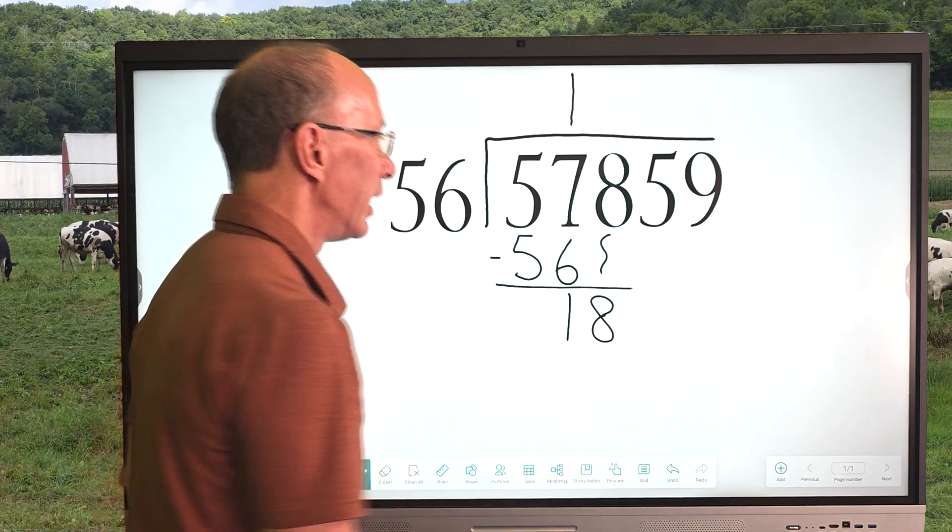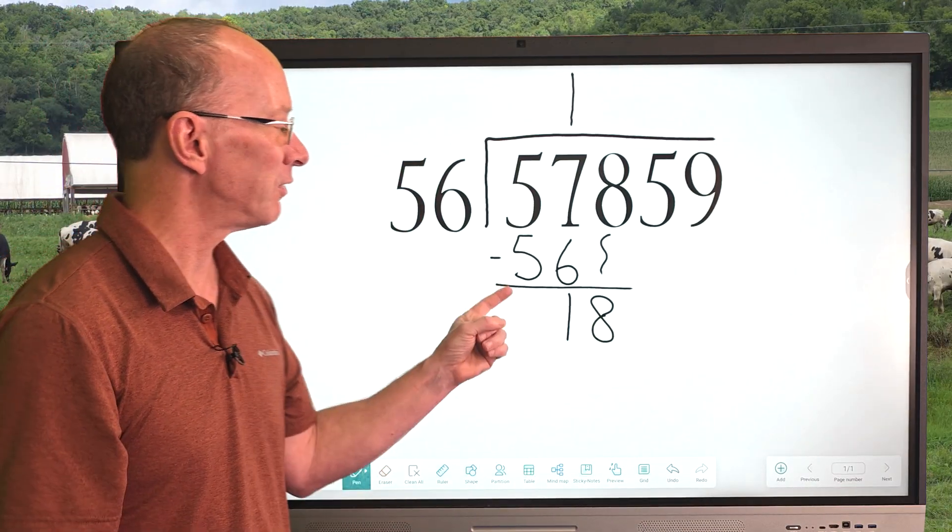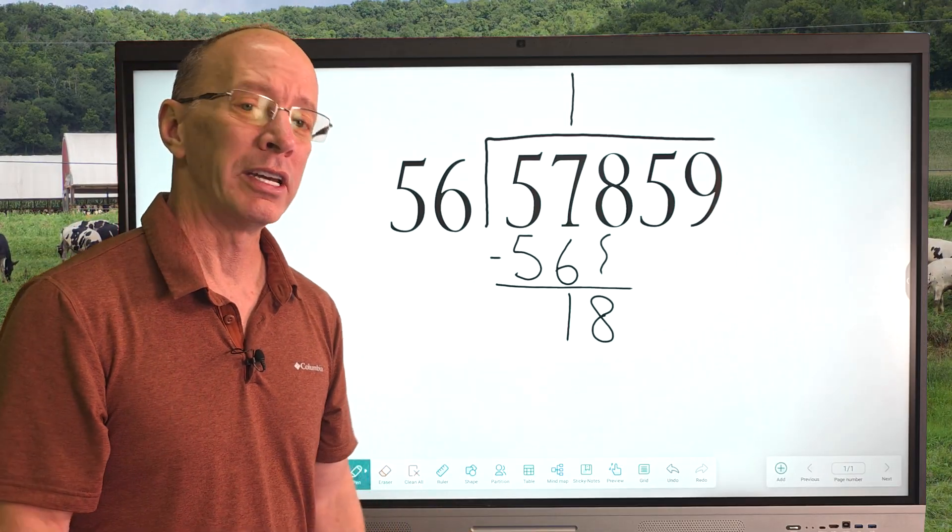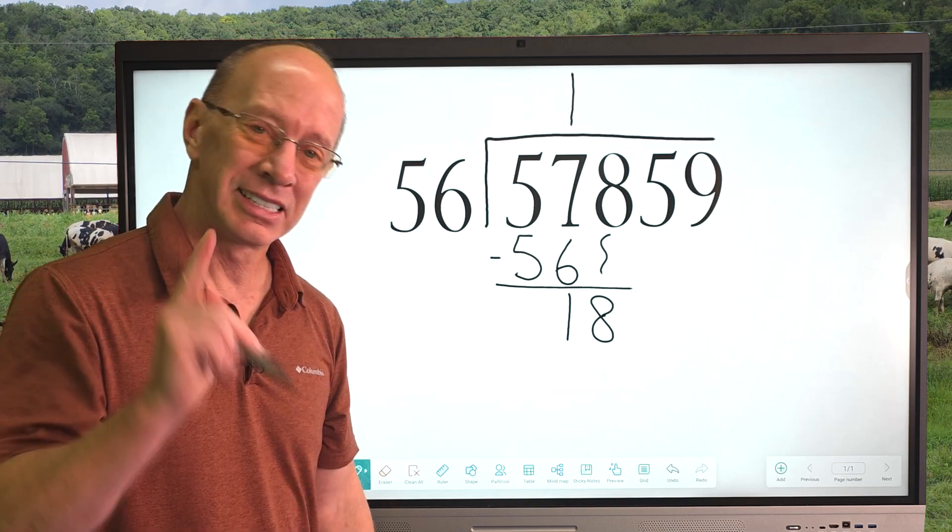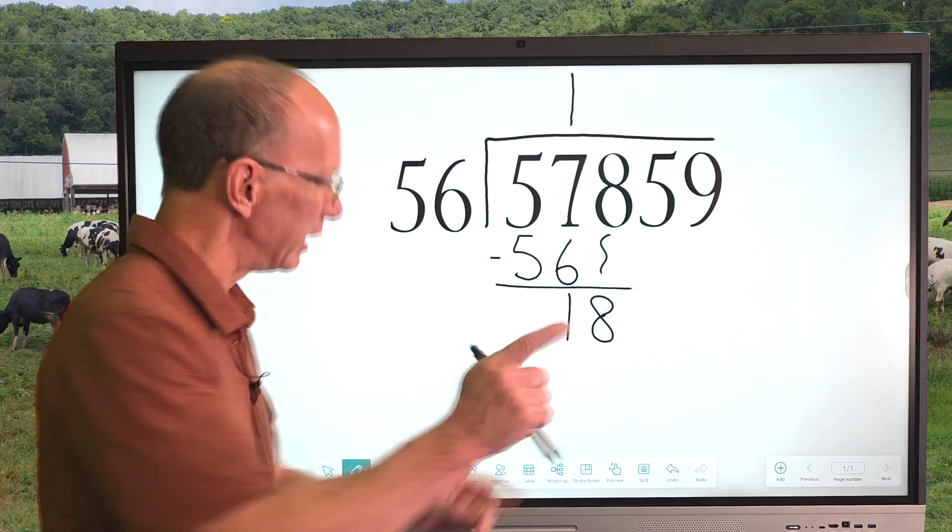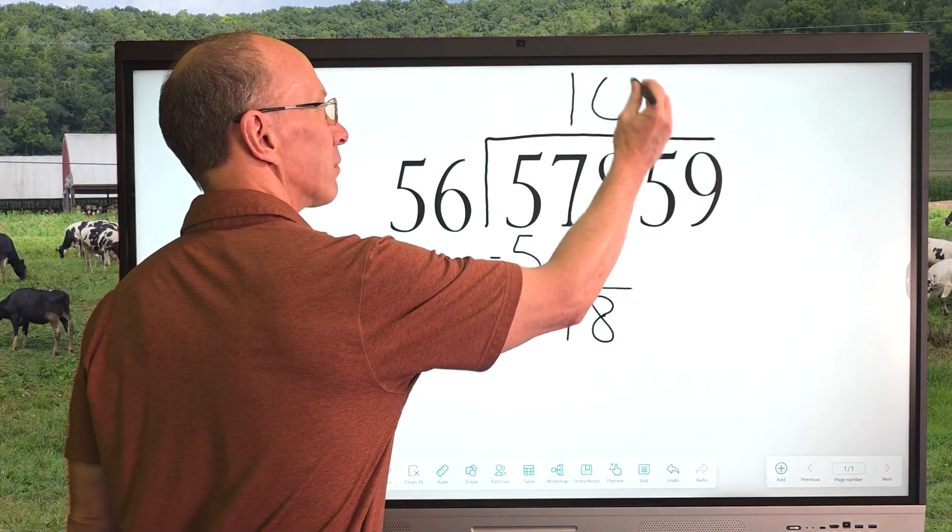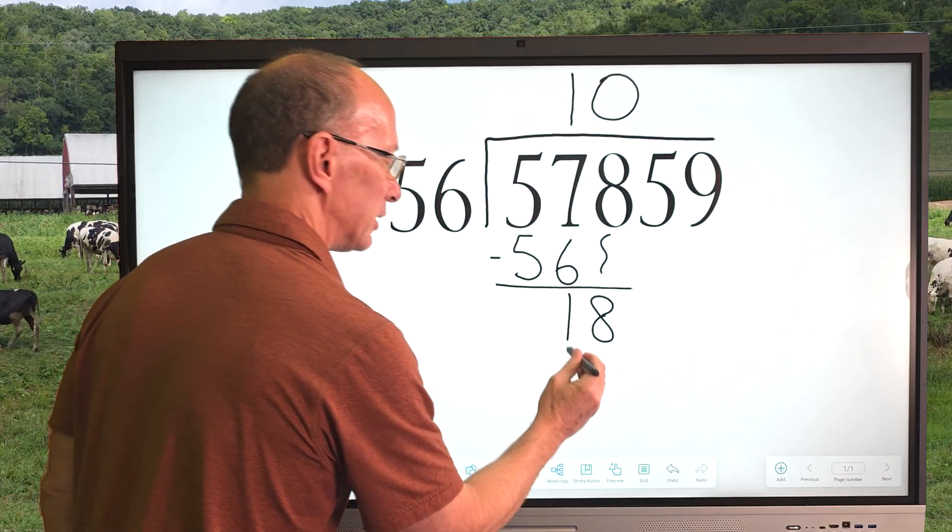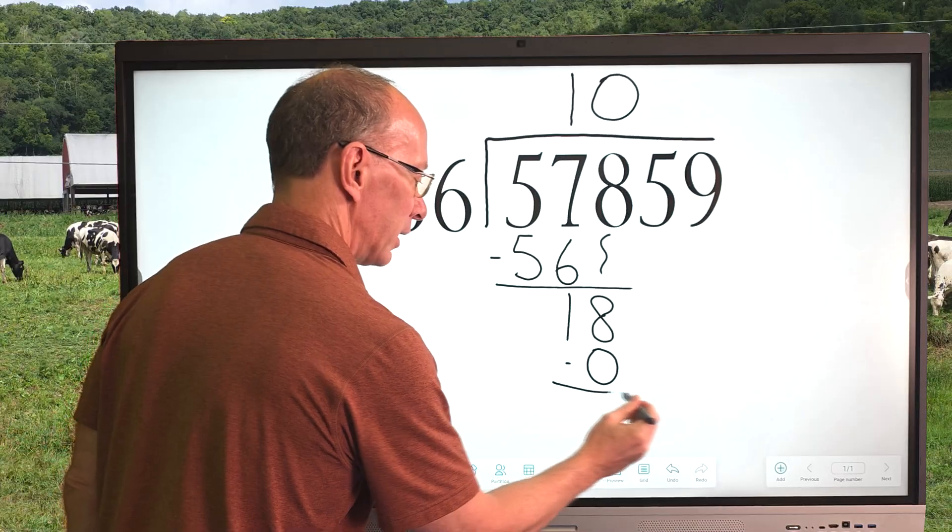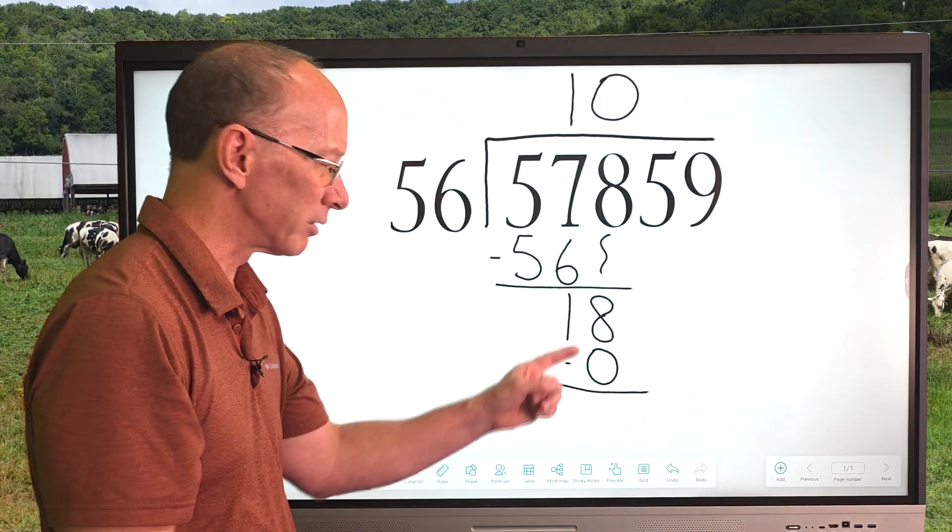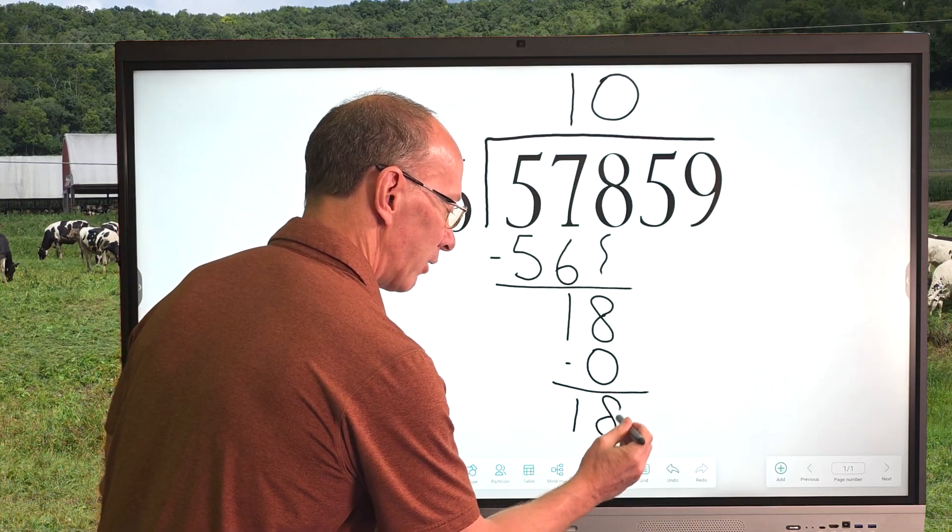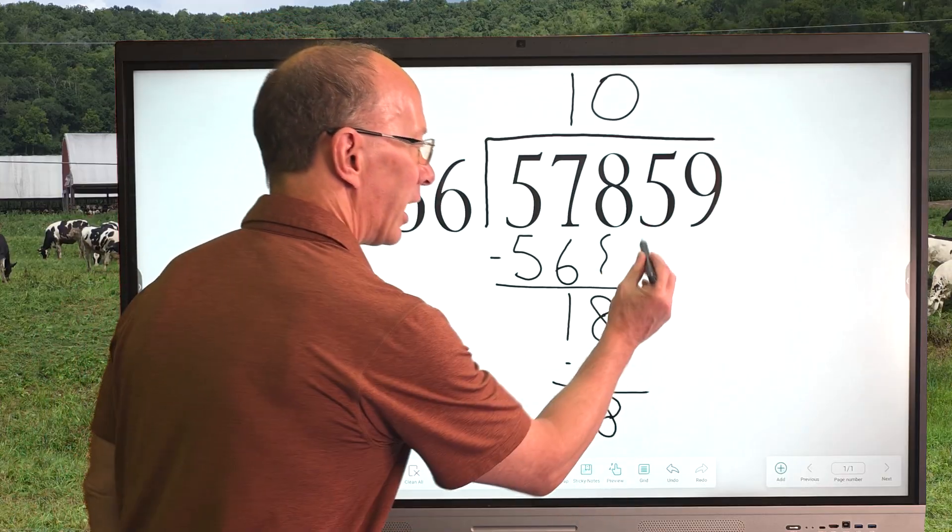And then our next step is we bring that next number down, just bring it down right here. So we're going to put 18 right there. And now how many times can 56 go into 18? It can't, can it? But we do have a number that will work. Zero. Zero times 56 equals zero. So stick with me, I'm going to show you how to do it. I'm going to put zero right here, and zero times 56 equals zero. Subtract. So do you see what I'm doing here?